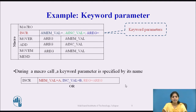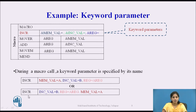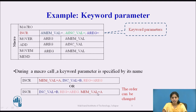In the second macro call, the name of the macro is again INCR. In keyword parameters, the order of the formal parameters can be changed. Here first INC_VAL=B is specified, then REGISTER=A_REGISTER, then MEM_VAL=A. So in keyword parameters we can change the order of the formal parameters, but in positional parameters we cannot change the order.